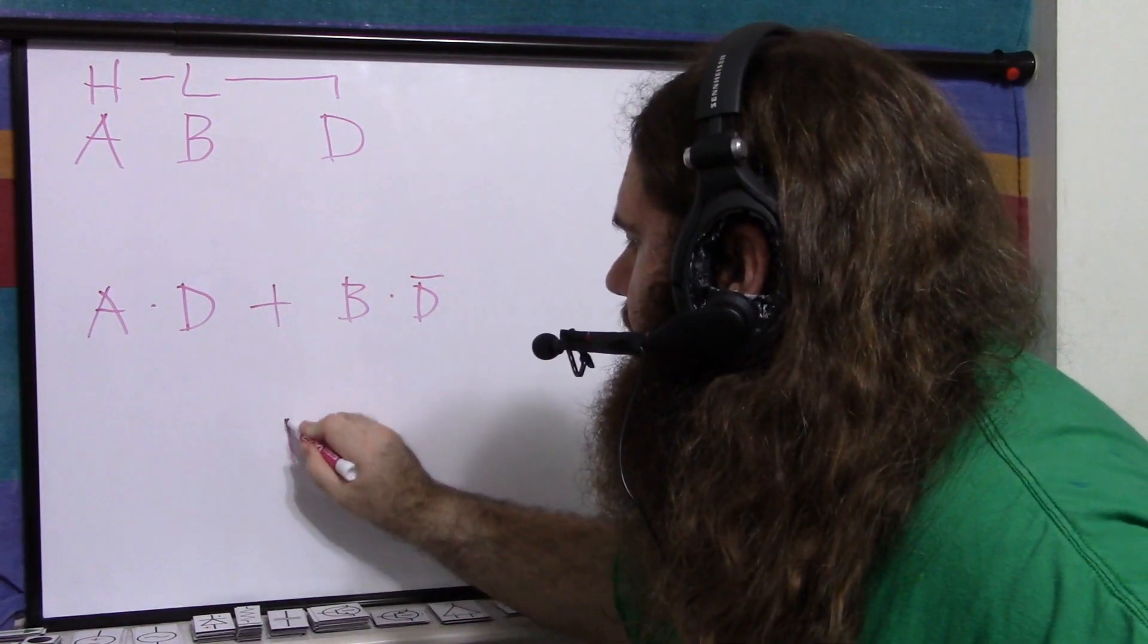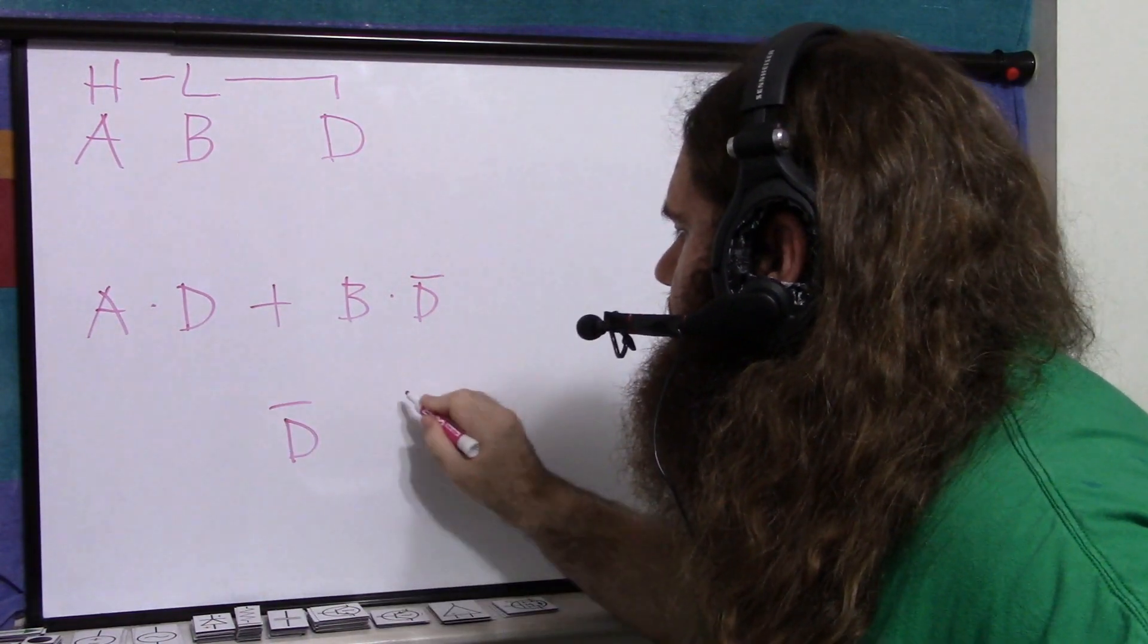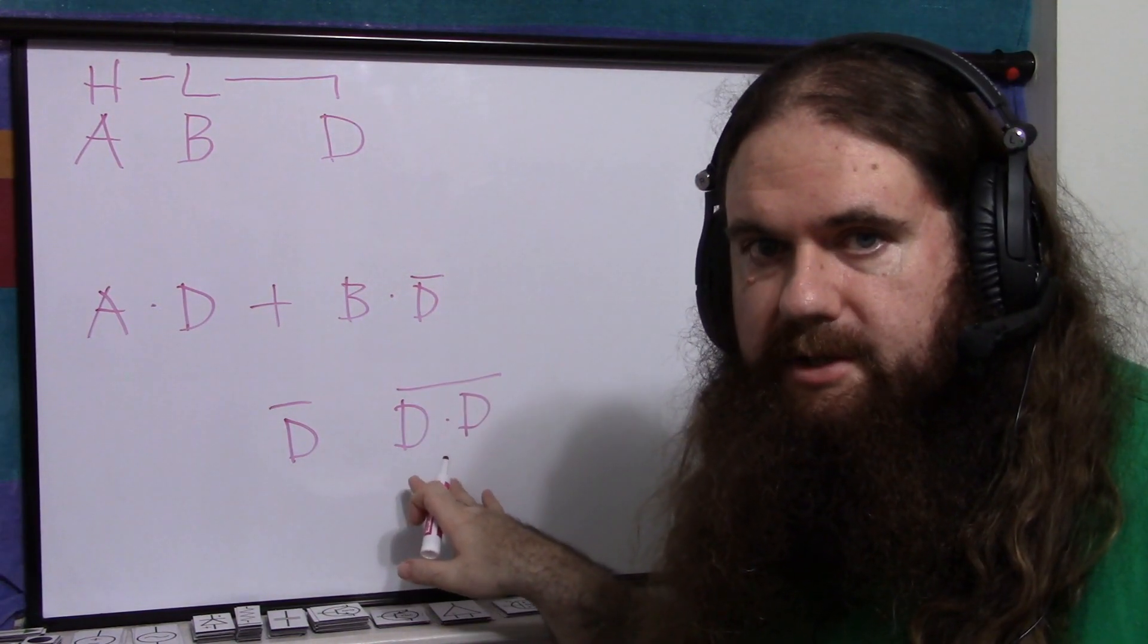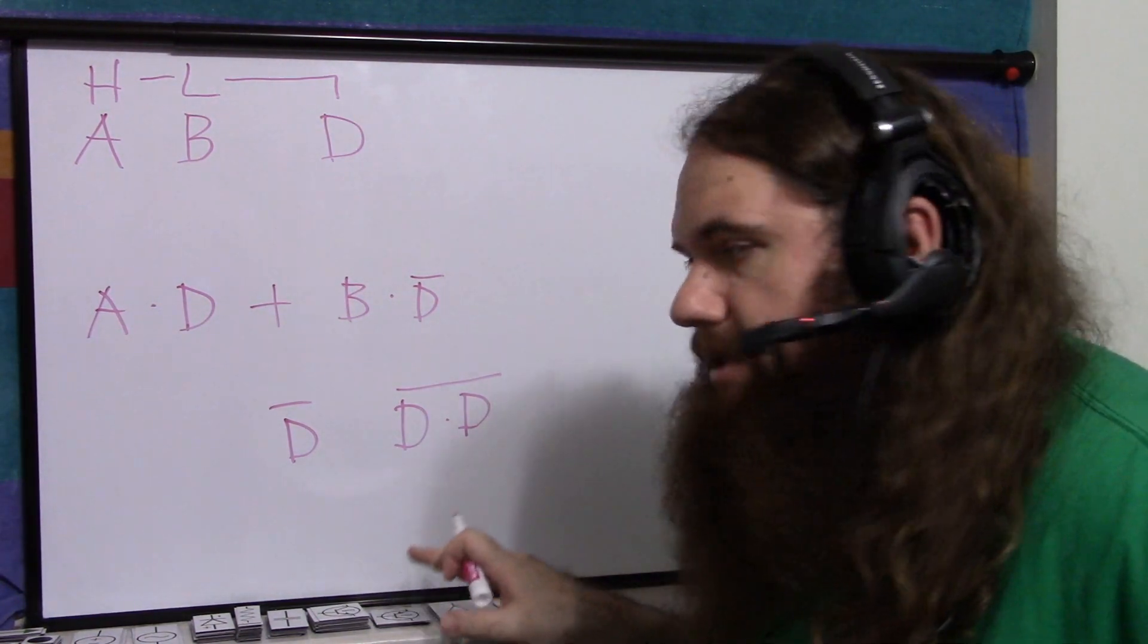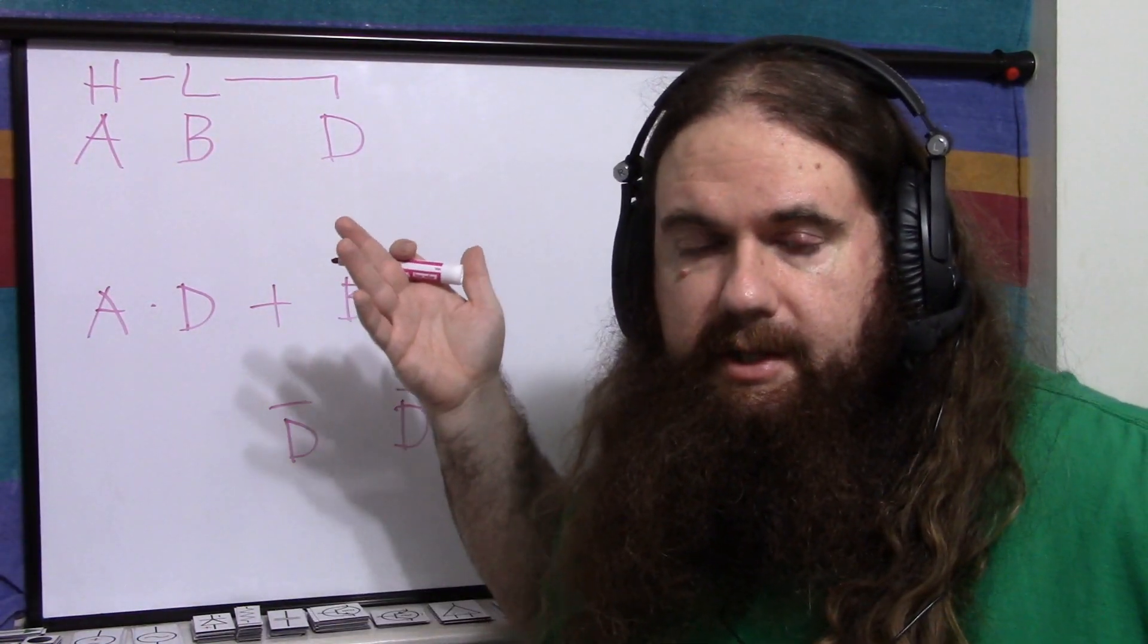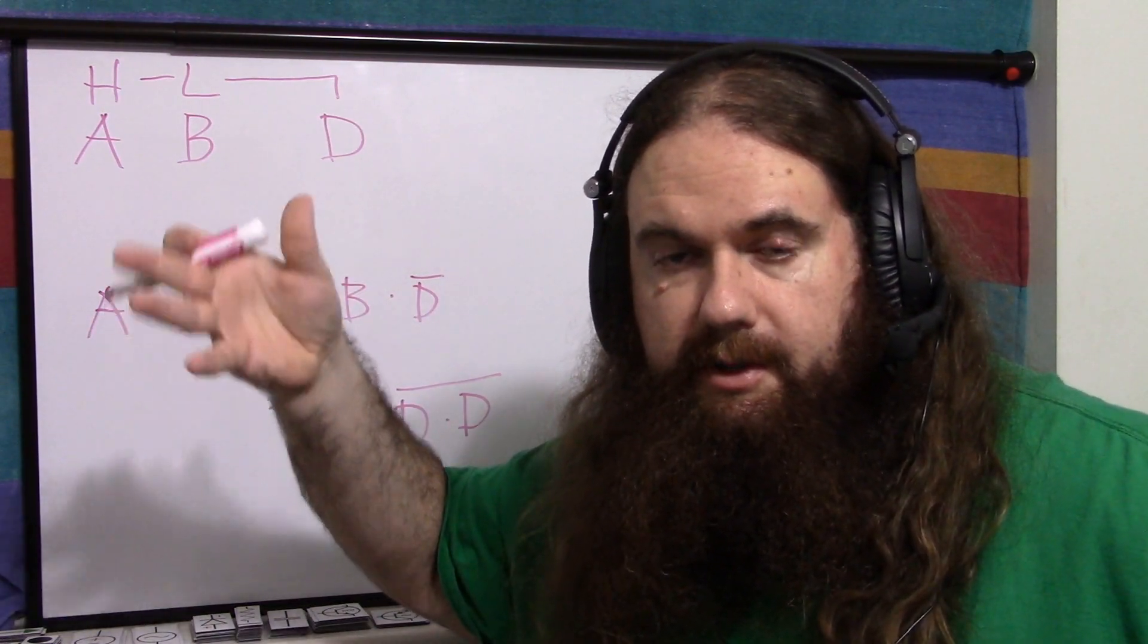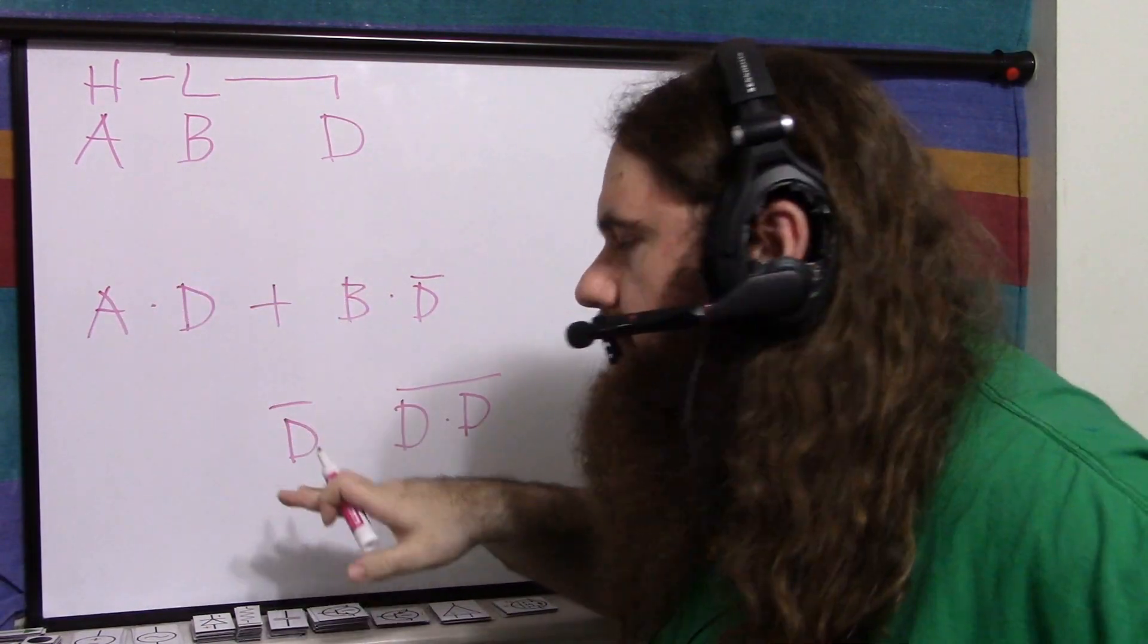Because remember, if you want to say NOT D, that's the same as D NAND D. So you can use a NAND gate as an inverter. It's just NAND with itself. Now obviously that's a waste. If you've got an inverter, you would use that because you can fit six inverters on a chip and four NANDs on a chip.